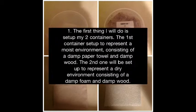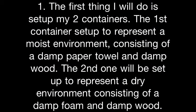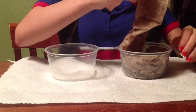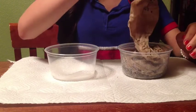Materials. The first thing I will do is set up my two containers. The first container is set up to represent a moist environment, consisting of a damp paper towel and damp wood. The second one will be set up to represent a dry environment, consisting of a damp foam and damp wood.